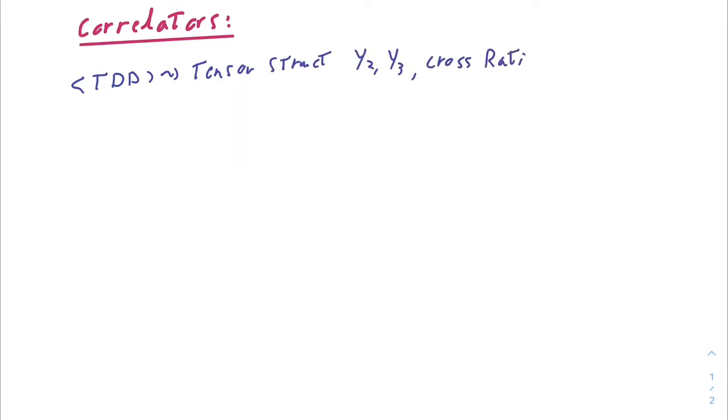It can be constructed with two different tensor structures, Y2, Y3, and there is only one cross ratio, V.